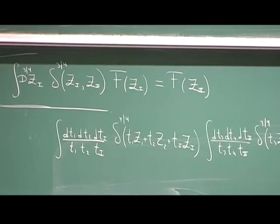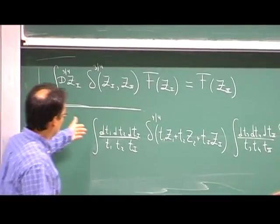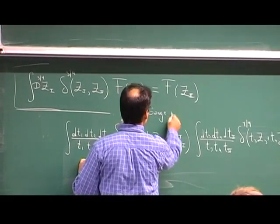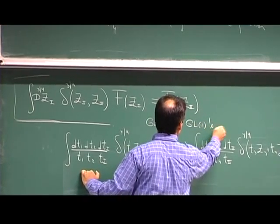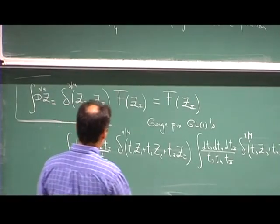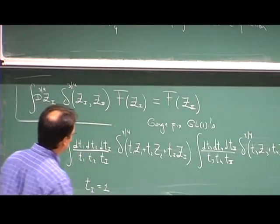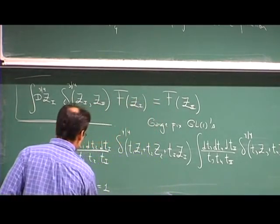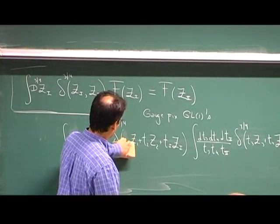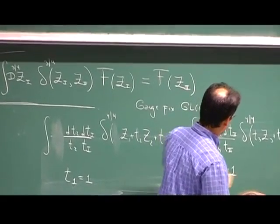So since I missed a chance of writing the volume, let's gauge fix the GL1s. I'm going to choose to gauge fix, say, T1 to 1 — so T1 disappears from here and from here. And here, let me choose to gauge fix T3 equals 1 — so this one disappears. But we still have to integrate over the internal ones using our projective delta function, right? We still have to integrate out the internal particles.